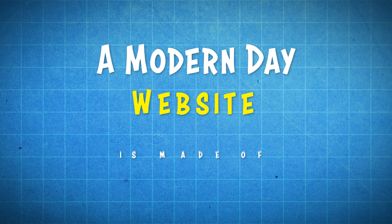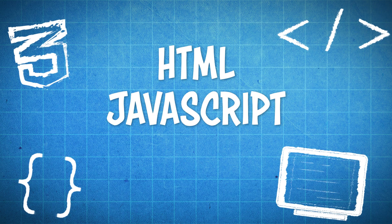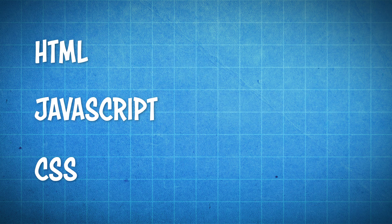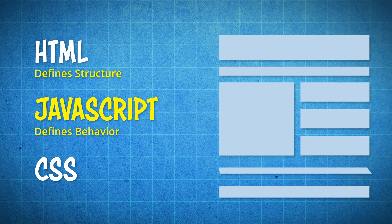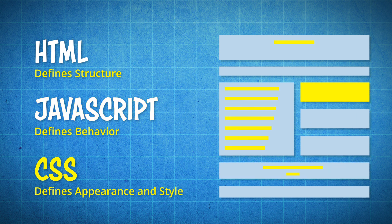A modern-day website is made up of three different files, or codes, and these files are HTML, JavaScript, and CSS. HTML defines the structure of a website, JavaScript defines the behavior of that website, while CSS defines the overall appearance and style of that website.